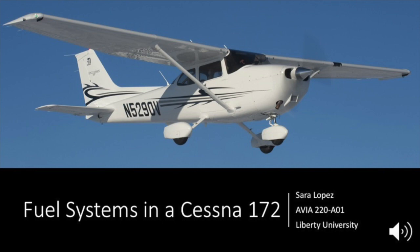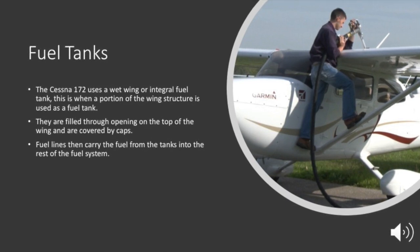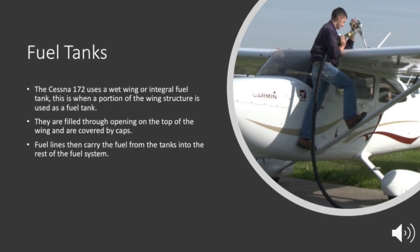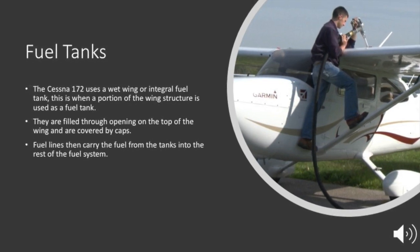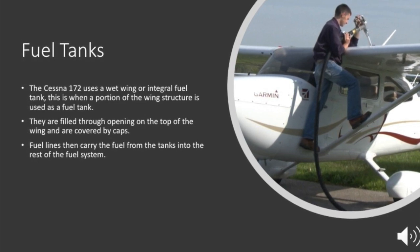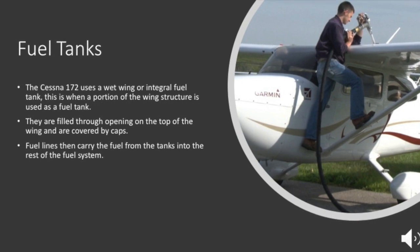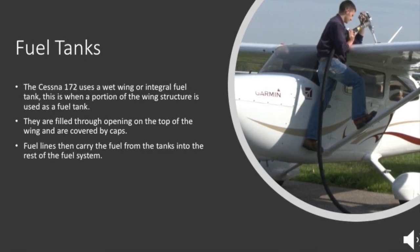Fuel systems in a Cessna 172. The Cessna 172 uses a wet wing, or integral fuel tank. This is when a portion of the wing structure is used as the fuel tank. They are filled through the openings on the top of the wing and are covered by caps. Fuel lines then carry the fuel from the tanks into the rest of the fuel system.